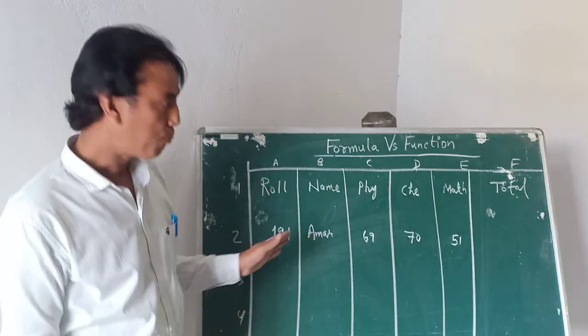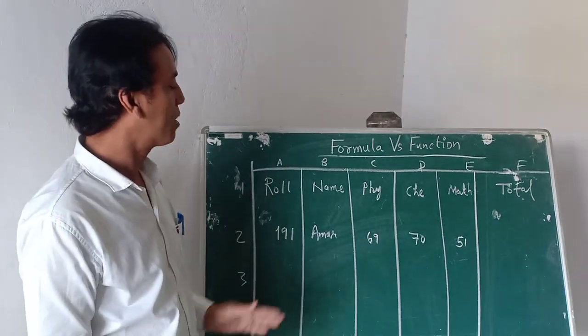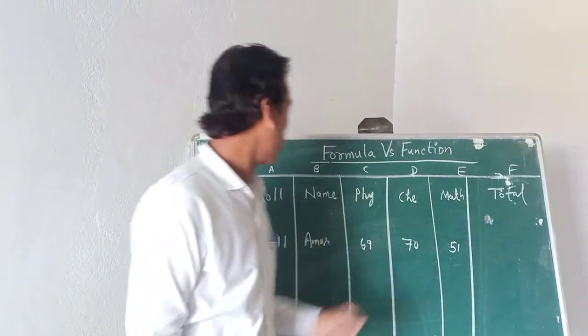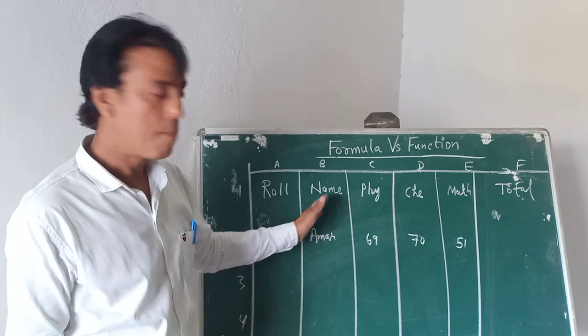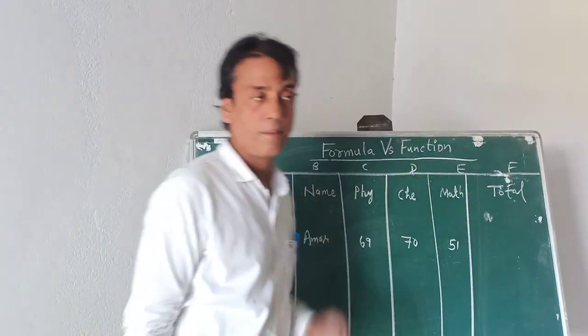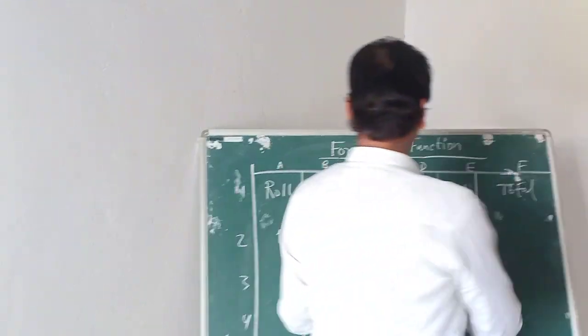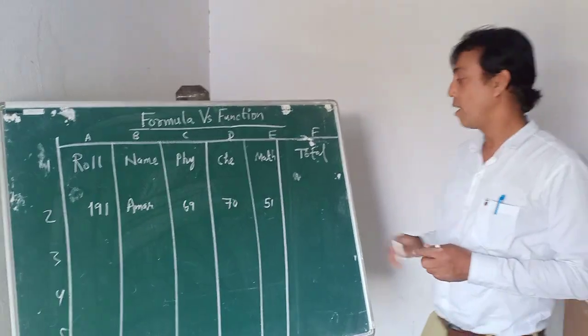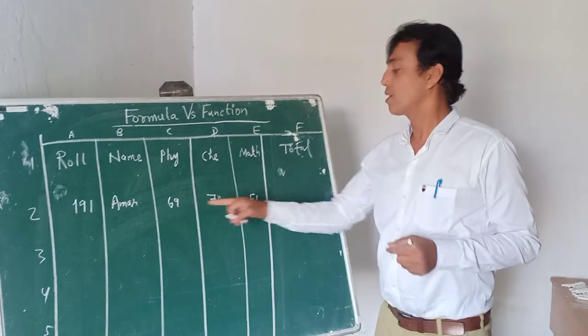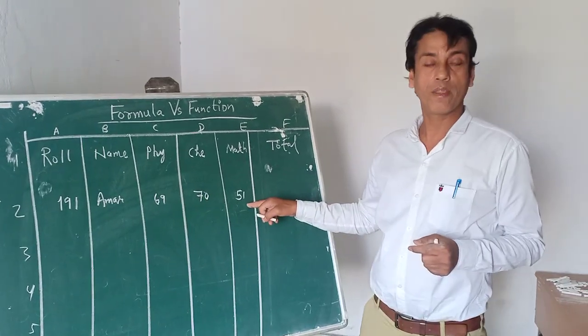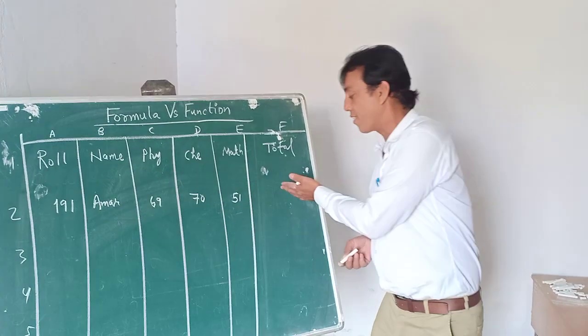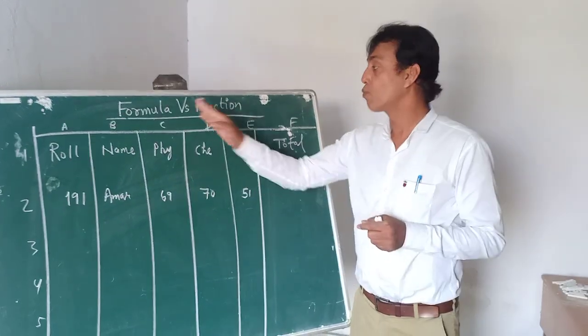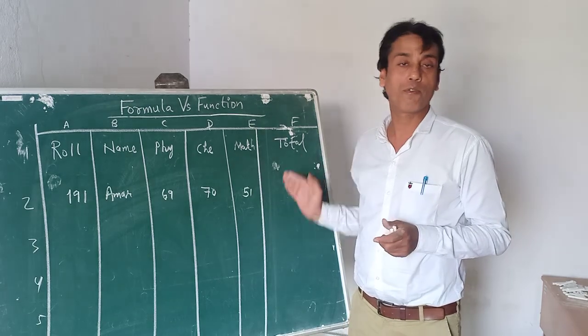We have an example of a mark sheet of students. We have six columns: roll number, name, marks of physics, chemistry, math, and total. If we want to calculate the total, we have three choices. The first choice is to manually calculate 69 plus 70 plus 51 and write the result. But Excel provides the possibility to use formula as well as function for this purpose.